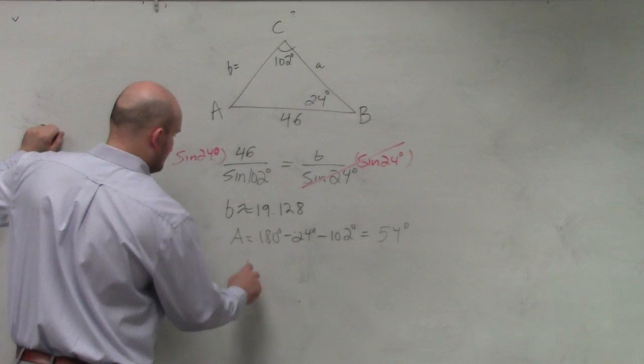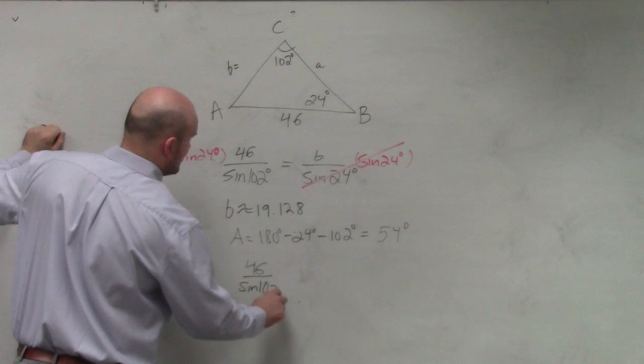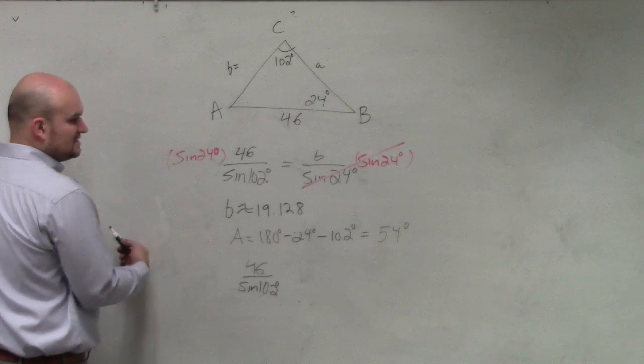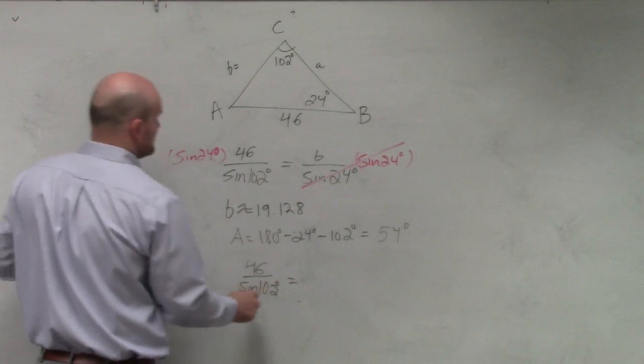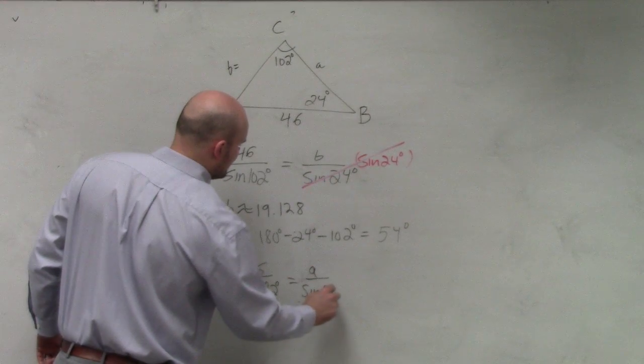So again, I'll do 46 over the sine of 102 degrees, which is C over sine of C, is equal to A over the sine of 54 degrees.